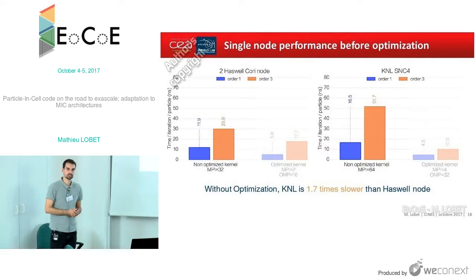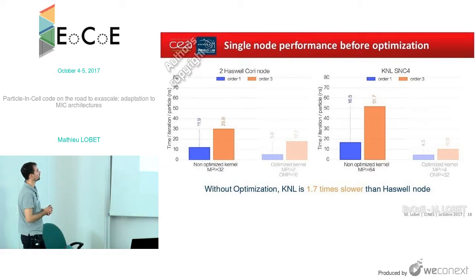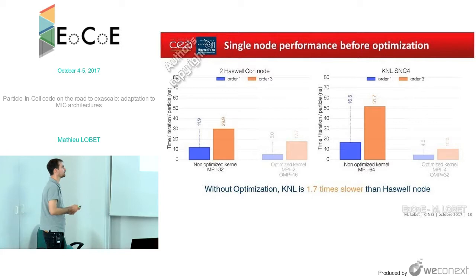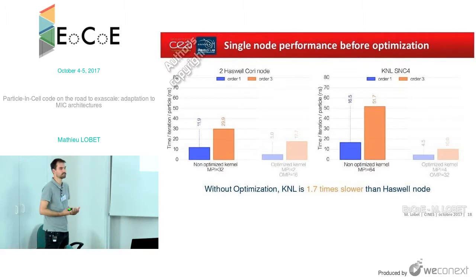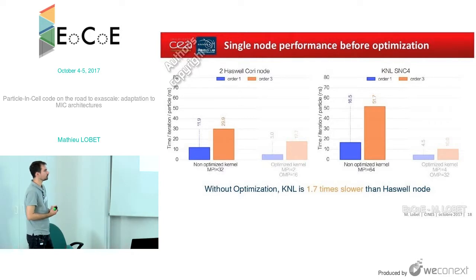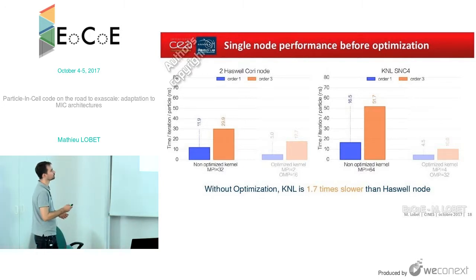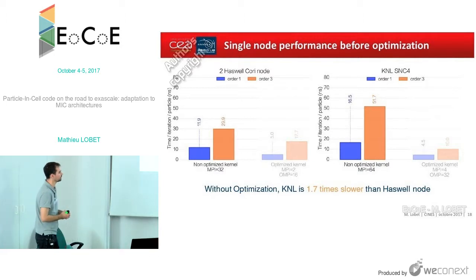We did the simulations with Cori, the KNL system at NERSC at Berkeley. It is composed of two partitions: a Haswell partition and a KNL partition. At that time we were able to play with the configuration, so we did the simulation with an SNC4 configuration in flat mode. In our case, we can get very similar performances with the quadrant and the SNC4 mode. Here I would like to focus on the results on each architecture separately.